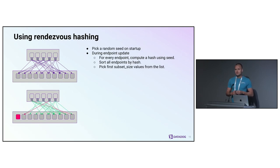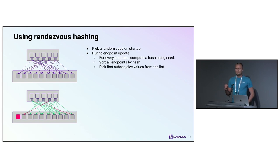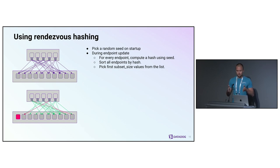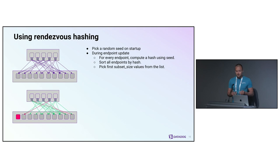The trick we use to deal with this is a technique called rendezvous hashing. On startup every client creates a random value which we call a seed, and then uses that seed to compute a hash for every server using the server IP address. Given a seed and server IP, the hash is stable. Our load balancer sorts all servers by hash and picks the first N servers from the list. As you can see, if a server gets deleted, this does not affect hashes for other servers because IP addresses and seeds are stable, and connections are sticky — which is exactly the property we need.